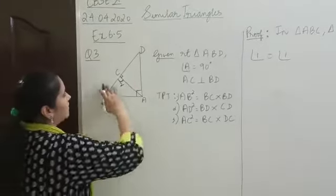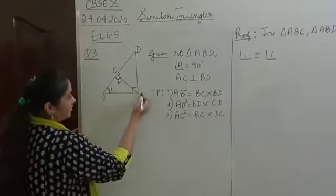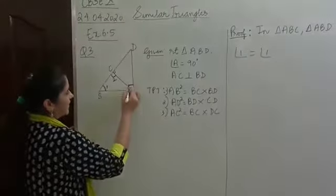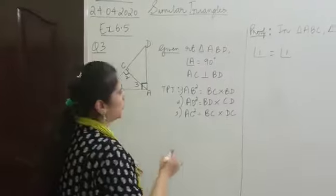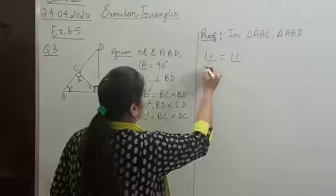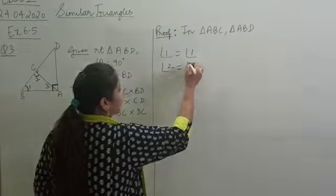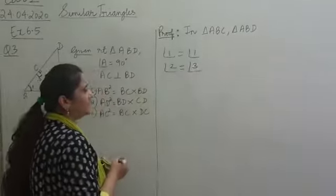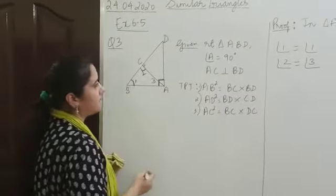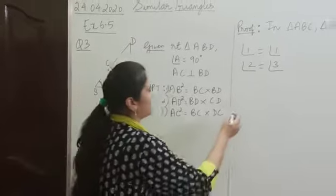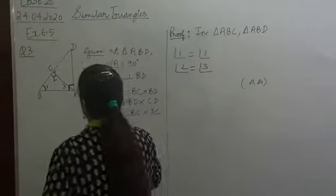The small triangle ABC is a right triangle — let's call that angle 2. The whole triangle ABD is also a right triangle, right-angled at A, which we call angle 3. So we have angle 2 equal to 90 degrees in the small triangle and angle 3 equal to 90 degrees in the big triangle. By the AA similarity criterion, these two triangles are similar to each other.